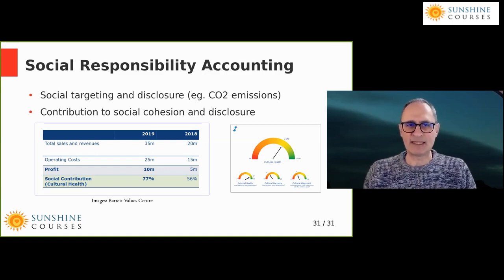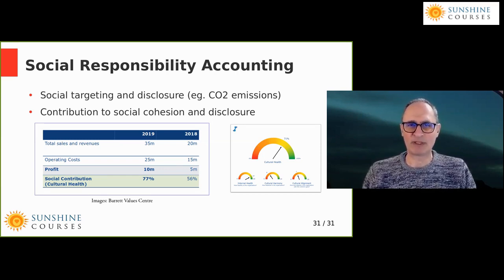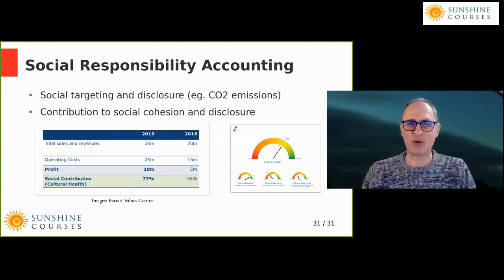There's an organisation called the Barrett Values Centre that has found a clever way of identifying this. They've created a simple measuring device like a speedometer which measures what it calls cultural health — the same thing as social contribution — as a percentage. A very unhealthy company would score zero percent and a perfect company would score one hundred percent, in terms of adopting positive universal values in how it treats its suppliers, customers, employees, community, and its behaviour generally.